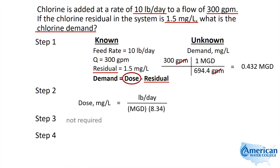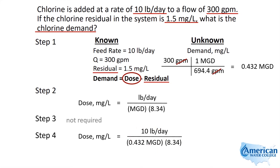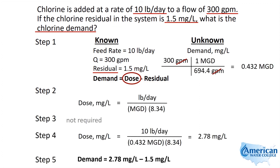Using the 10 pounds per day they gave us and the 0.432 MGD we calculated, we plug those in and get a dose of 2.78 milligrams per liter. They said our residual was 1.5, so the difference between the two — 2.785 minus 1.5 — gives us a demand of 1.3 milligrams per liter.